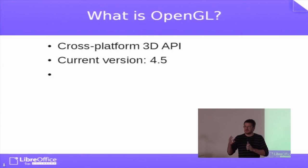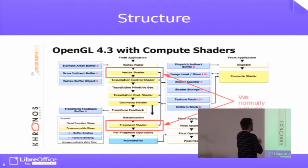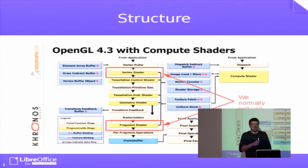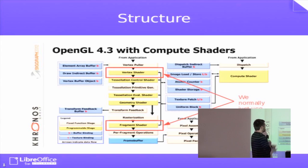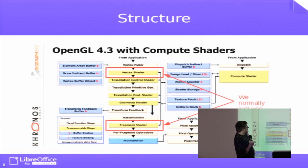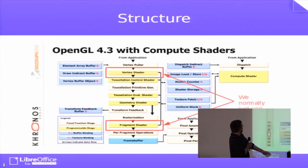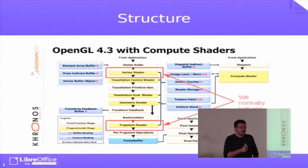You can select some stages that are done and some others that are not. That's the structure of OpenGL 4.3 — quite similar to 4.5. You can forget everything about compute shaders; in LibreOffice we use OpenCL for that. What we normally use is a vertex shader and a fragment shader. A shader in this sense is more or less a small C-like program that's executed on the GPU instead of the CPU.